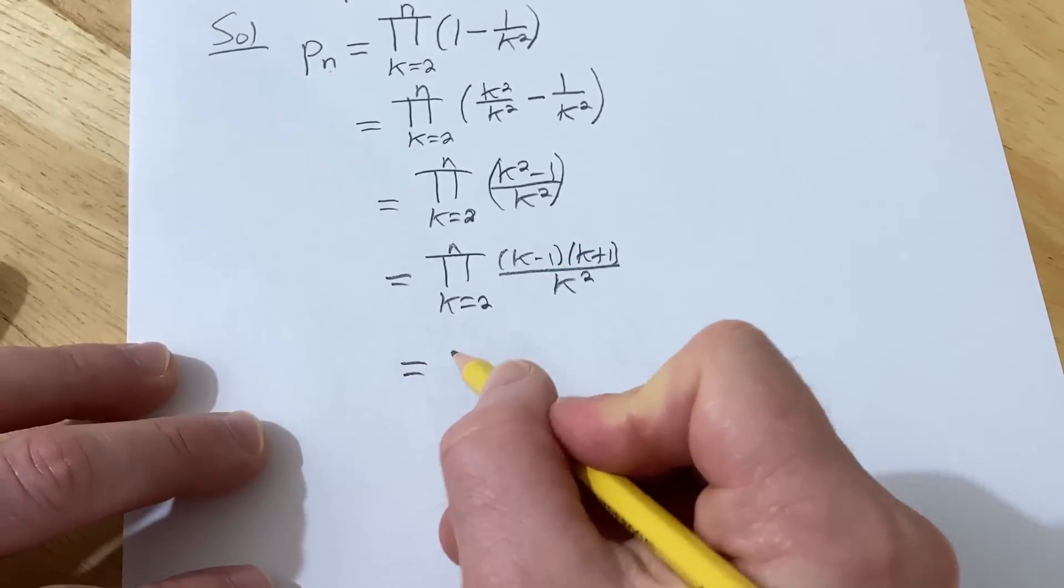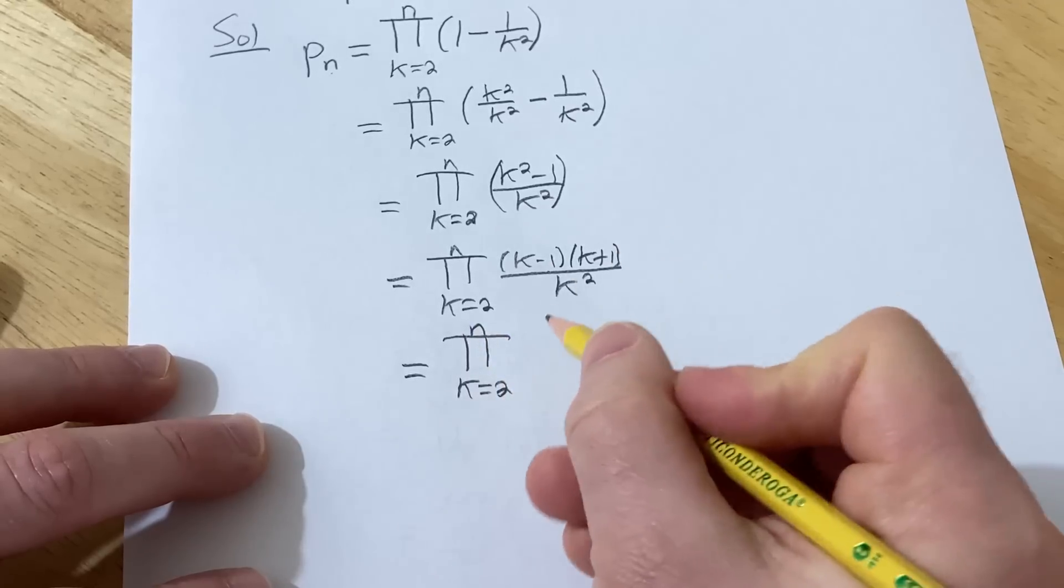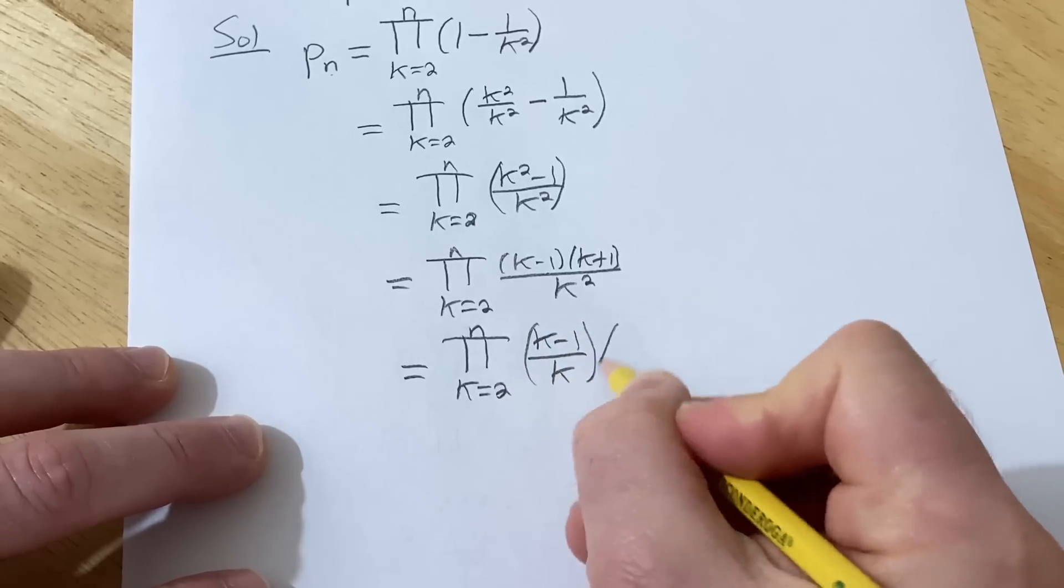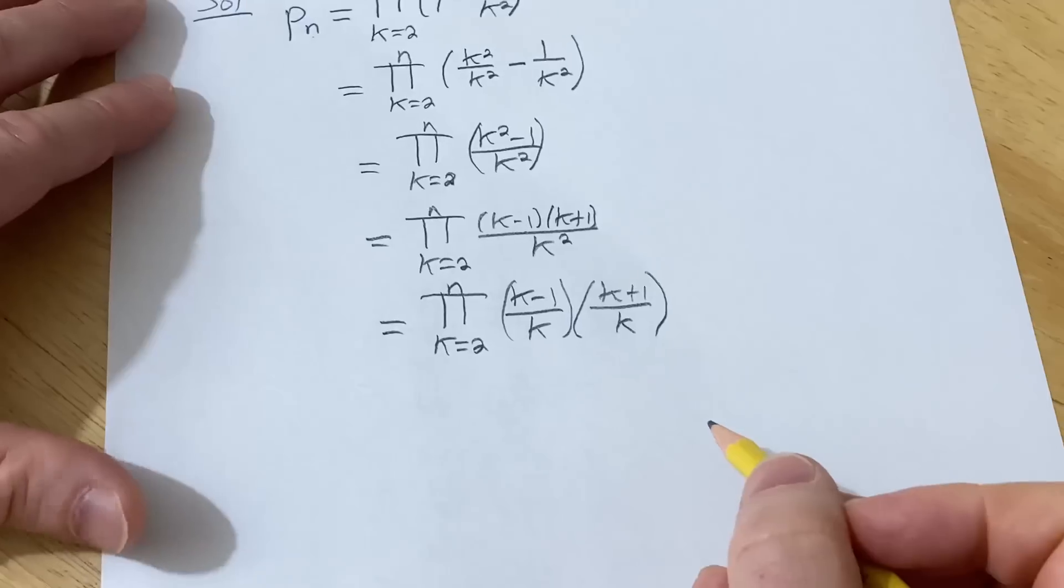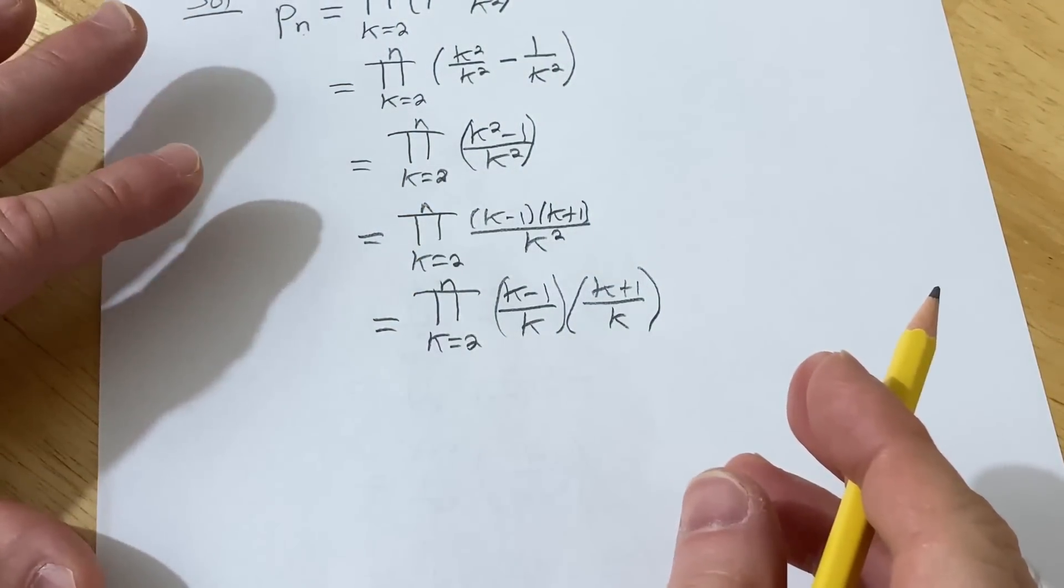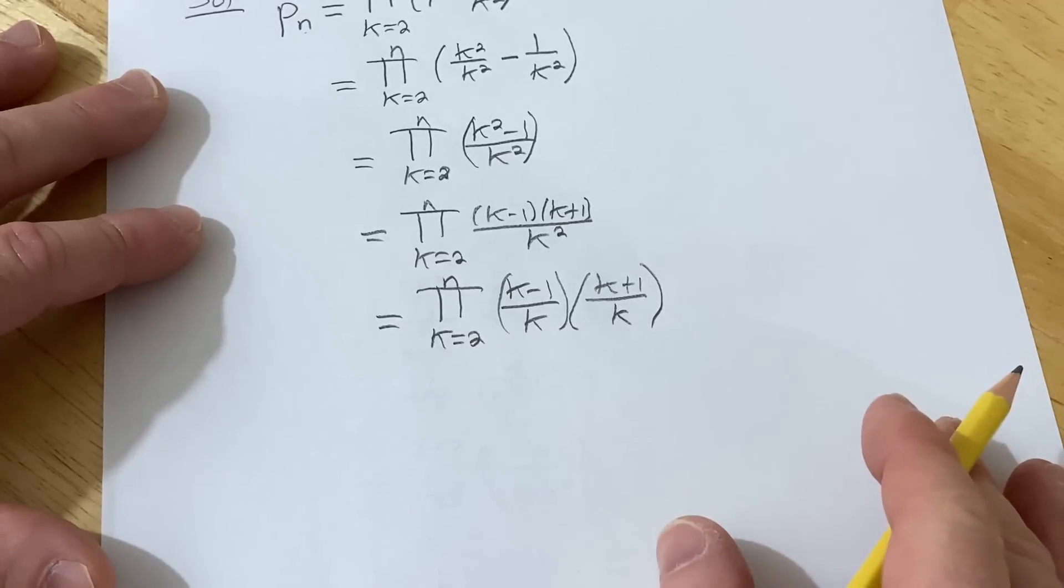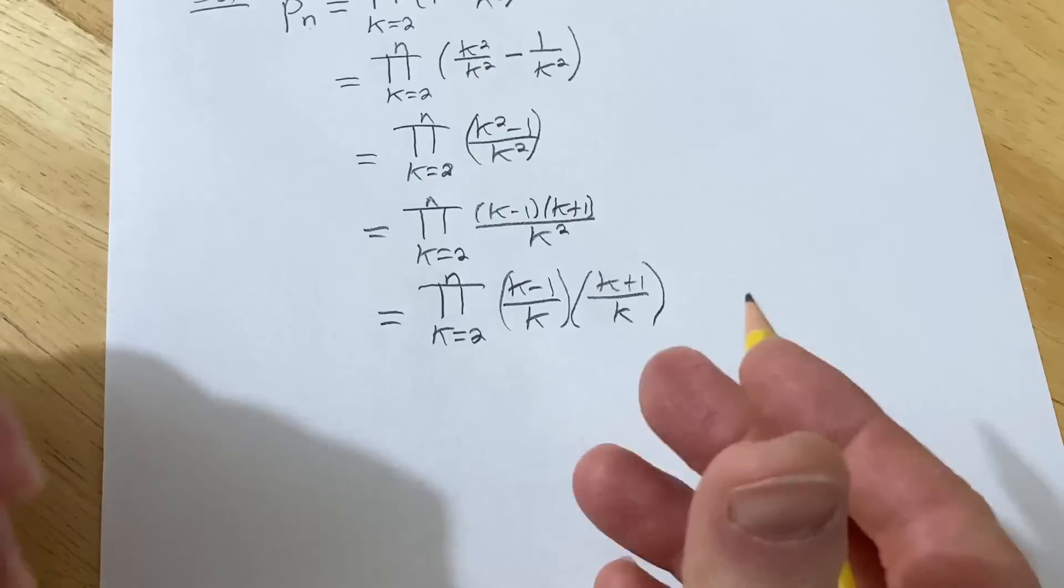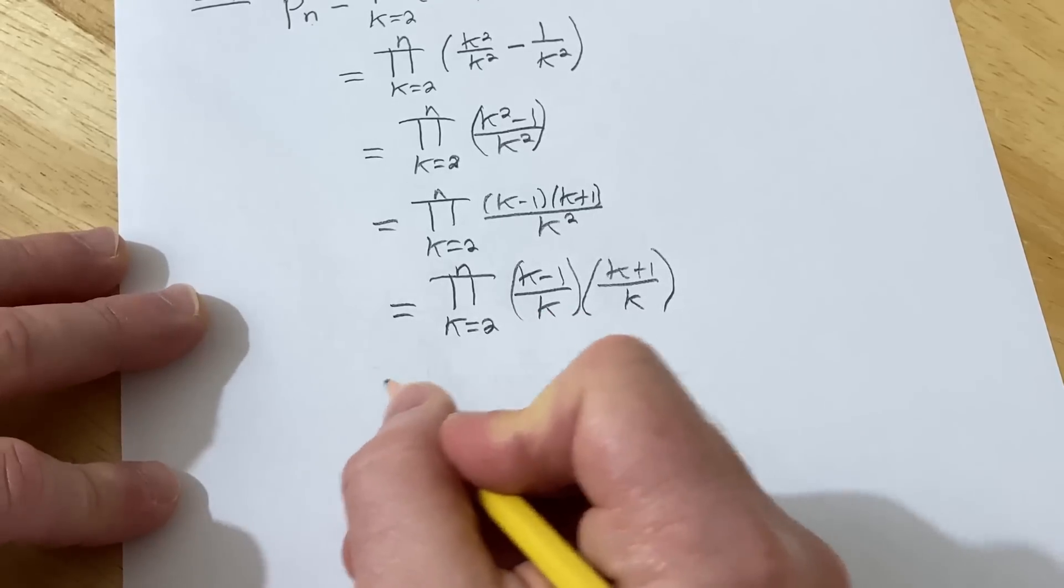Notice that's the difference of squares. So this is π k equals 2 to n (k-1)(k+1) over k². So again the goal is to plug stuff in and look for a pattern so things cancel right because we want to take the limit of this. I mean we need to get an answer right we're going to let n go to infinity in this and try to get an answer. So I'm going to write it another way. Watch this. Just so I can really see what's going on. I'm going to write this as (k-1)/k times (k+1)/k.